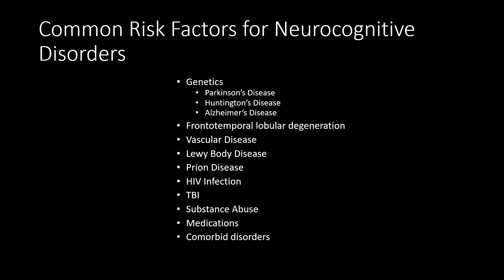Common risk factors for the development of neurocognitive disorders include genetics, especially in relation to Parkinson's disease, Huntington's disease, and Alzheimer's disease. Additional risk factors include frontotemporal lobular degeneration, exposure to vascular diseases, Lewy body diseases, prion disease, HIV infection, traumatic brain injury, substance abuse, medications, and comorbid disorders.